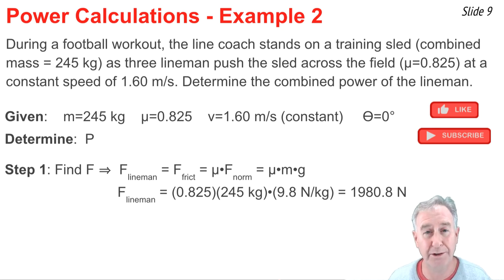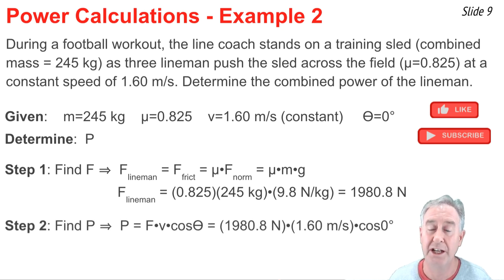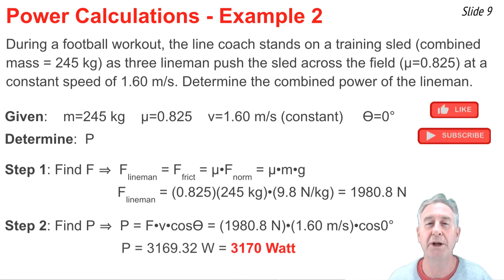Now, we know the force, and we know the velocity. In an equation a few slides back said, the power is equal to the force times the velocity. So, we can take our force, multiply it by the 1.60 meters per second, and multiply it by the cosine of 0 degrees, and we end up getting 3169.32 watts, or rounding, we can say 3170 watts.